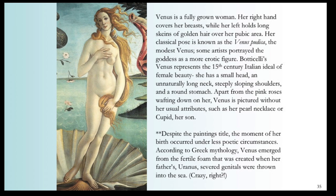Venus is a fully grown woman. Her right hand covers her breast while her left holds long skeins of golden hair over her pubic area. Her classical pose is known as the Venus pudica — the modest Venus. Botticelli's Venus represents the 15th century Italian ideal of female beauty: a small head, an unnaturally long neck, steeply sloping shoulders, and a round stomach. Apart from the pink roses wafting down on her, Venus is pictured without her usual attributes such as her pearl necklace or Cupid, her son. According to Greek mythology, Venus emerged from the fertile foam created when her father Uranus's severed genitals were thrown into the sea.